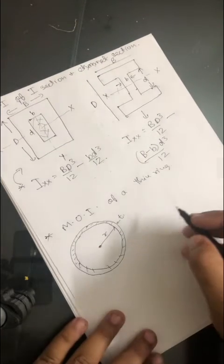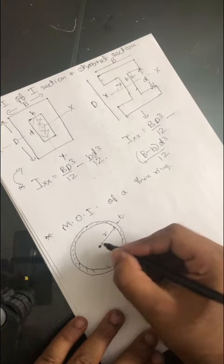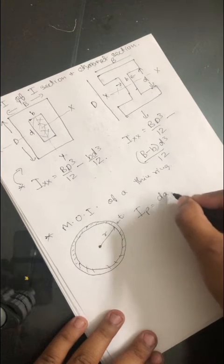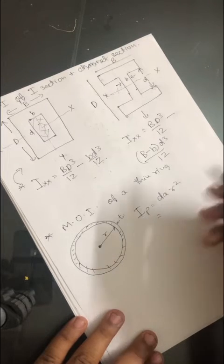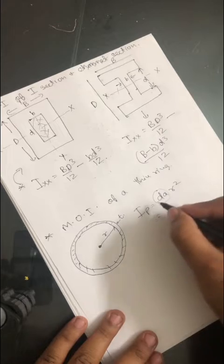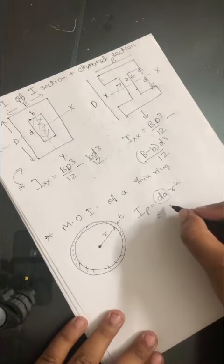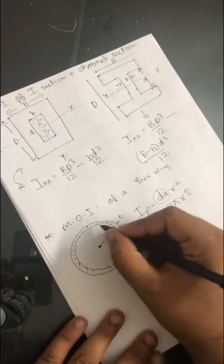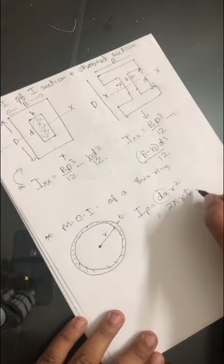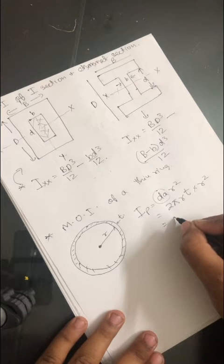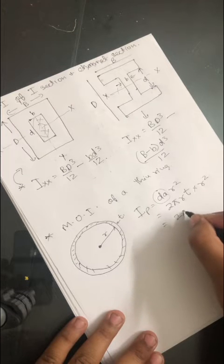The moment of inertia about the polar axis, Ip, will be equal to the integral of r² dA. Here, dA is the area of the thin ring element, which is 2πr times thickness t. So Ip equals the integral of 2πr·t·r², giving 2πR³t.